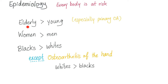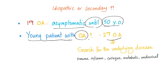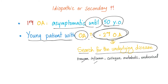Epidemiology: more common in the elderly, more common in women. Is the osteoarthritis idiopathic or secondary? If it's primary osteoarthritis, it's idiopathic and usually asymptomatic until the age of 50. However, if you see a young patient with osteoarthritis, it's probably secondary. Please search for the underlying disease — could be trauma, inflammation, collagen disease, metabolic disorder, or endocrine disorder.